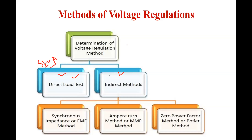Indirect methods are classified into three types: first is the synchronous impedance method, second is the ampere turn method, and third is the zero power factor method. The synchronous method is also called the EMF method. The ampere turn method is also called the MMF method. The most important and most accurate method is the Potier triangle method, which is used in many practical applications because it gives very accurate voltage regulations.